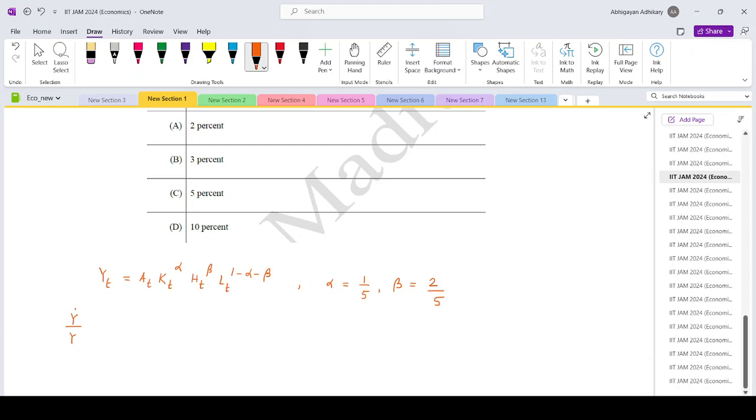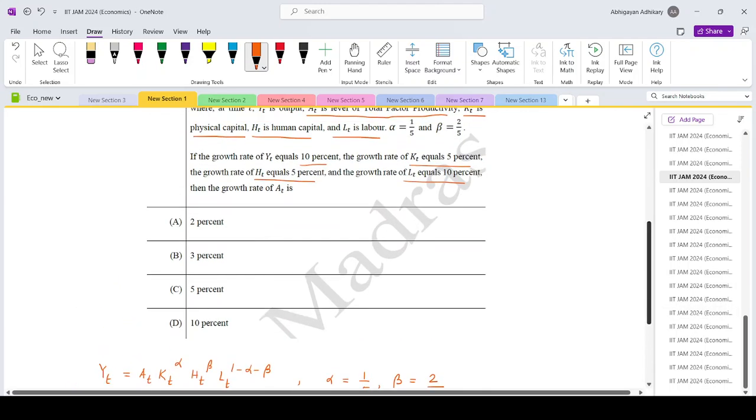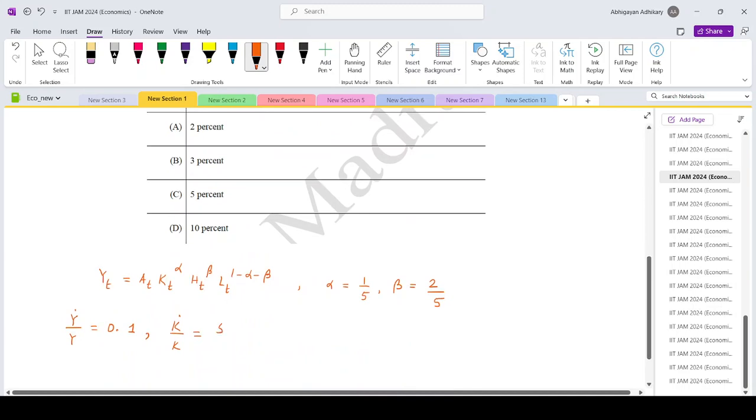Then we have the growth rate of capital, k dot by k, which is given as 5%, so you can write it as 5 by 100.